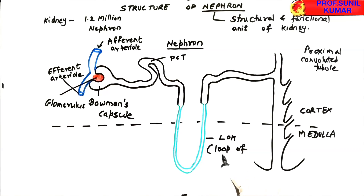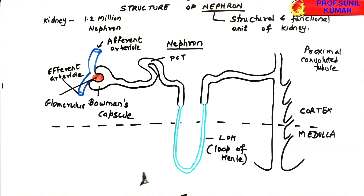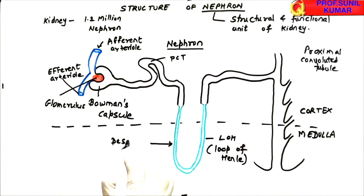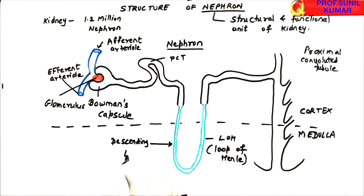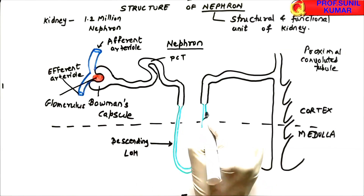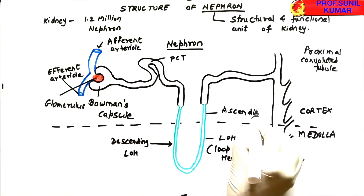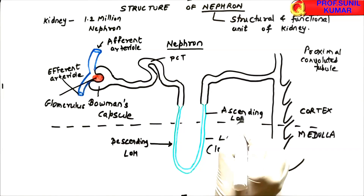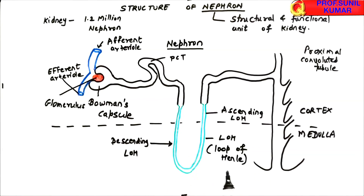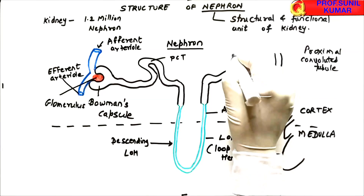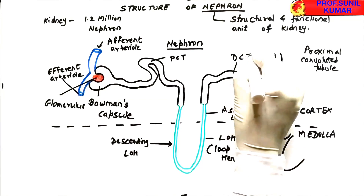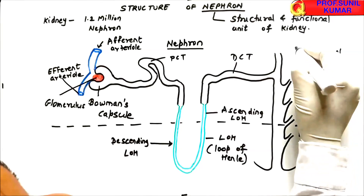The loop of Henle has two limbs: the one going towards gravity is called the descending limb of the loop of Henle, and the one going against gravity is called the ascending limb of the loop of Henle. One limb is permeable to water and permeable to salt; the other is permeable to salt but impermeable to water. Then comes the DCT — distal convoluted tubule.